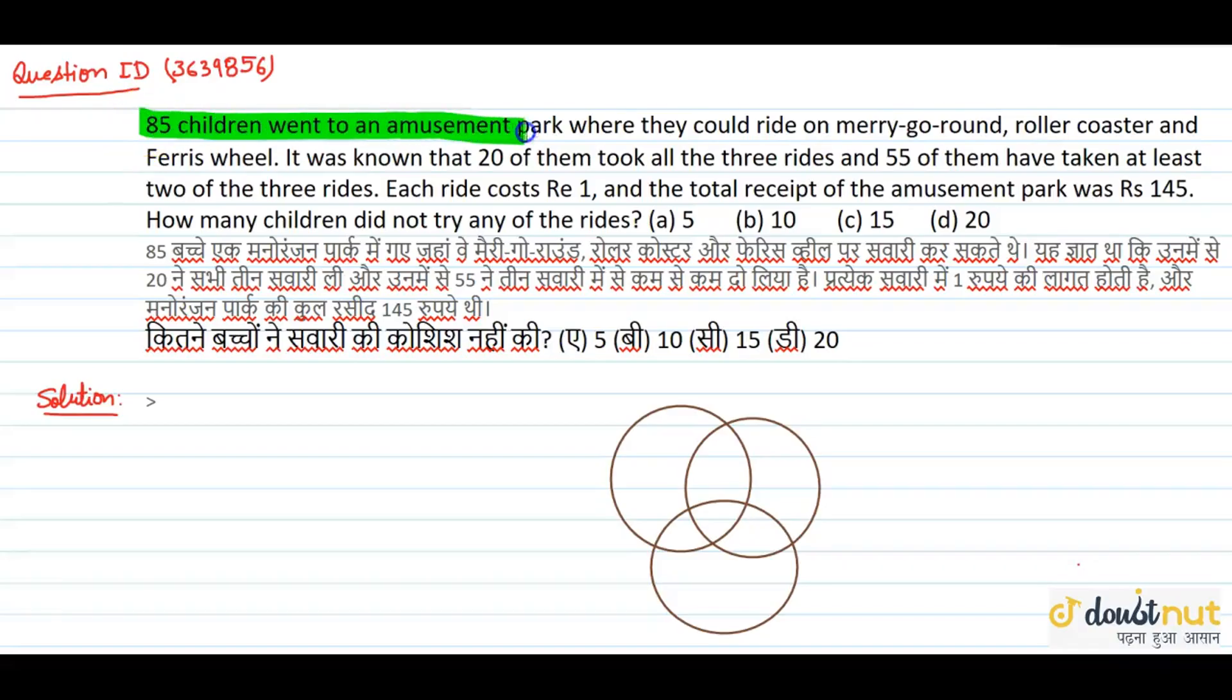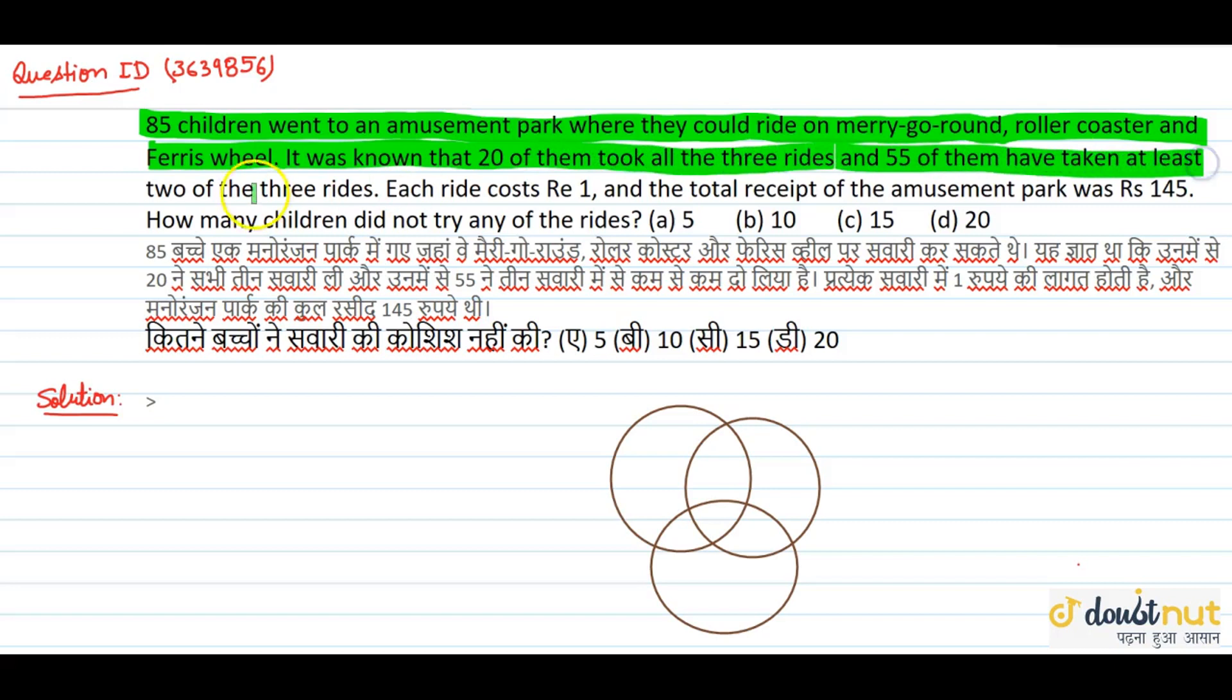85 children went to an amusement park where they could ride on merry-go-round, roller coaster and ferris wheel. It was known that 20 of them took all the 3 rides and 55 of them have taken at least 2 of the 3 rides. How do we solve this question? There are some children who have 3 rides and 55 of them have taken at least 2 of 3 rides.